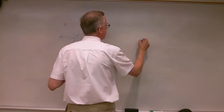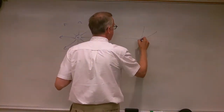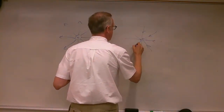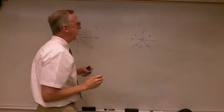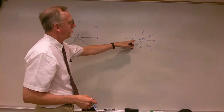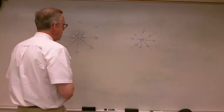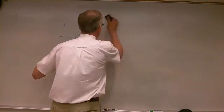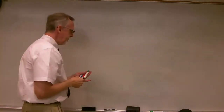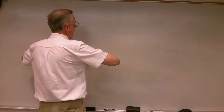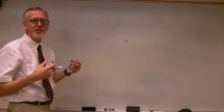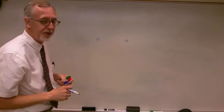If we had a negative charge, we've got basically something very similar but with lines going into the negative charge. Those are field line drawings for a positive charge and a negative charge. Now let's try a combination — a positive charge and a negative charge together. What's the field going to look like for this combination of charges?